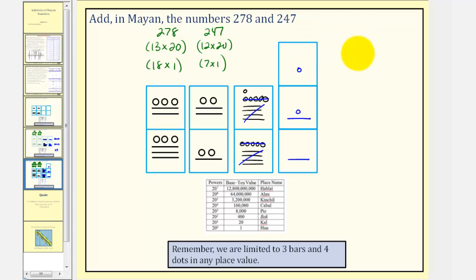So this means we have one 400 or 1 20 squared. We have six 20s and we have five ones. So we have 400 plus 120 plus five, that would be 525. And notice how the sum of 278 and 247 is 525. So our work is correct. I hope you found this helpful.